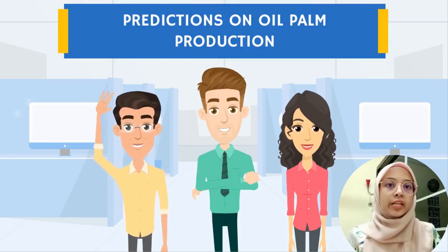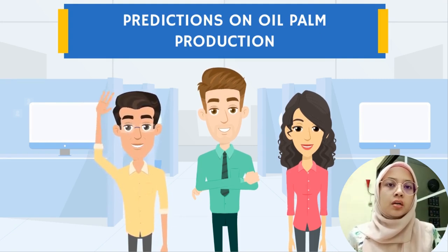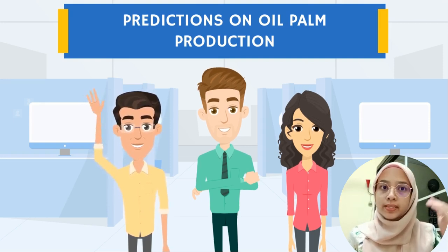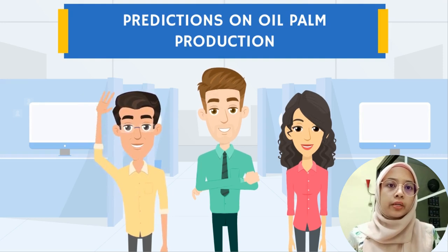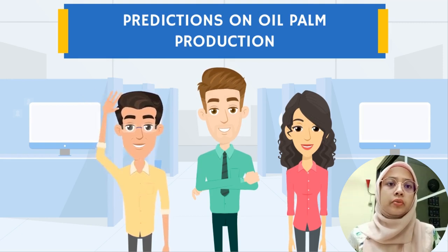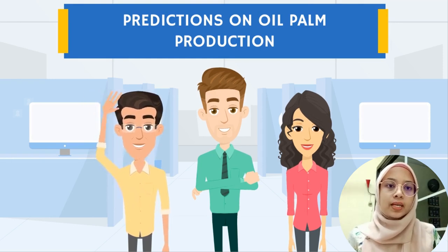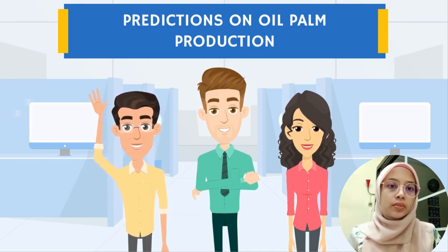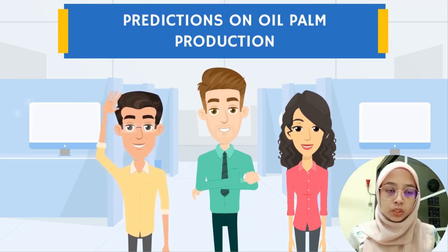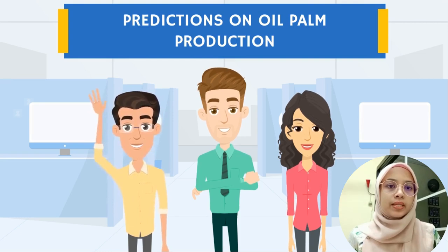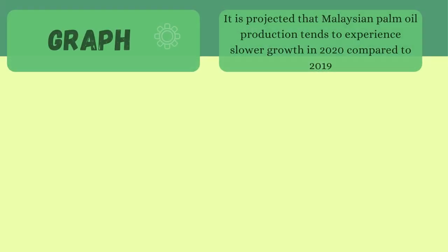Next, we can look at predictions on oil palm production. There are two situations. First, CIMB Research raised its 2020 current palm oil price forecast to 2,500 ringgit from 2,300 ringgit per ton. Second, the spot price climbed as high as 2,936 ringgit per ton on September 3rd, from its year-to-date low of 2,021 ringgit per ton on May 12th.